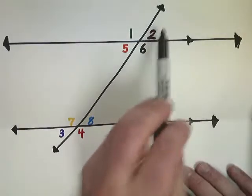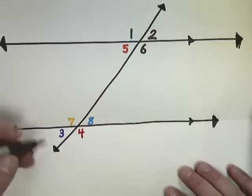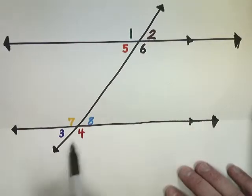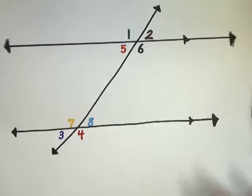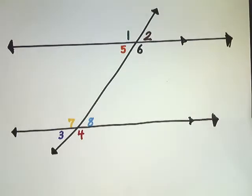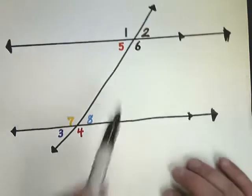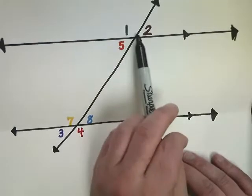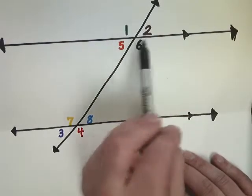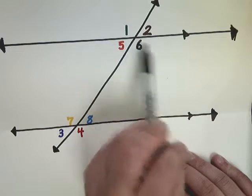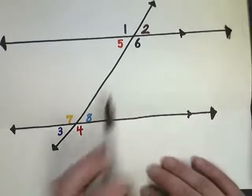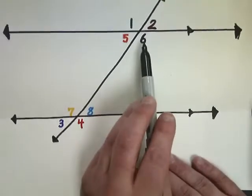When two parallel lines are intersected by the same line, that line is referred to as a transversal. Eight individual angles are made. The angle relationships can be defined based on whether the angles are related by being at the same crossing — we'll refer to each intersection as a 'crossing' for this explanation.